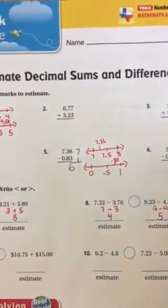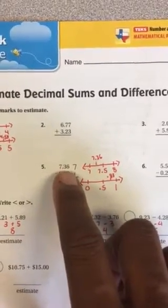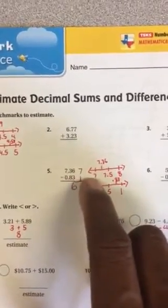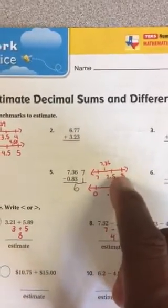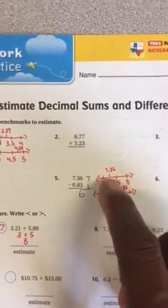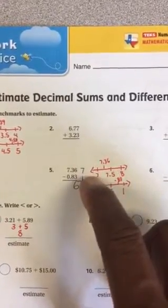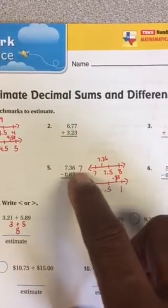Take a look at number 5. A subtraction problem works the same way. We have 7 and 36 hundredths. The first number is 7. The next number is 8. The benchmark in the middle is 7 and a half. 7 and 36 hundredths is less than 7 and a half. So it is closer to being 7.